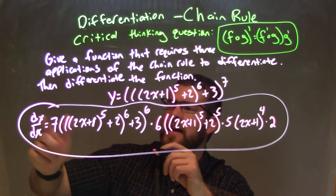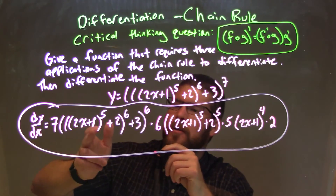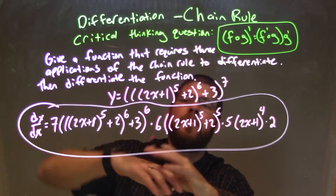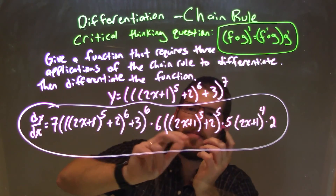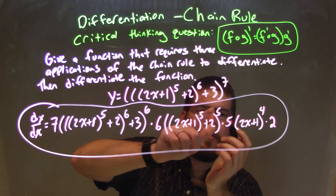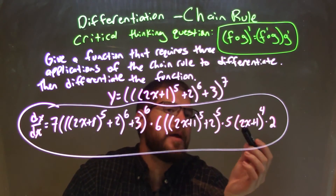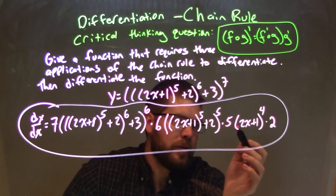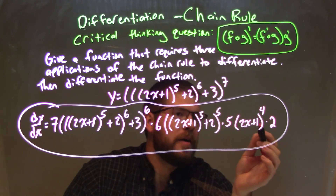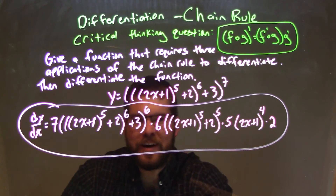By doing that, we have our final answer: dy/dx equals seven, whole bunch of parentheses, times (2x + 1) to the fifth power, plus two to the sixth, plus three to the sixth — times, the first Russian doll is off — six times, double parentheses, (2x + 1) to the fifth, plus two to the fifth power. That's the next Russian doll. Chain rule a third time: times five times (2x + 1) to the fourth power, times two. The Russian dolls came off, and that is our final answer.